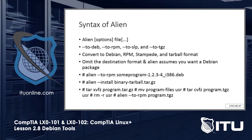Here's a little bit of the syntax of Alien, which will allow you to convert an RPM package to a Debian package. Also notice that we can use a Tarball to decompress, pull out information, move it to another location, and actually install. Use Alien with the RPM option to actually create that — we can take a Tarball and turn it into an RPM. We're going to do a short little demonstration on Alien.